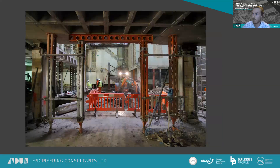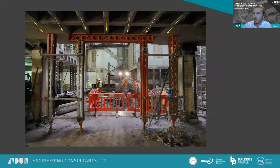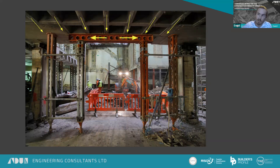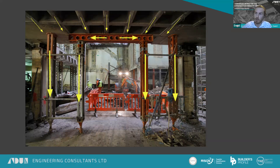The same applies in simple temporary works schemes. In a cut and carve job with cut-line propping, you've got a two-way spanning floor slab where the unsupported side is supported by props or a superslim soldier, which transmits the load out to the props and down to the foundations. You also have to have that equal and opposite reaction from the ground or slab providing support to the whole system. These are your more conventional load paths.